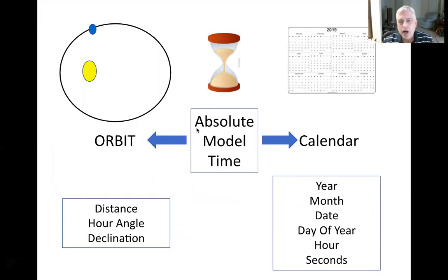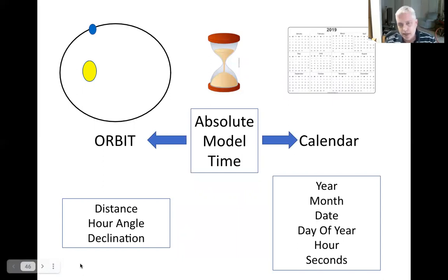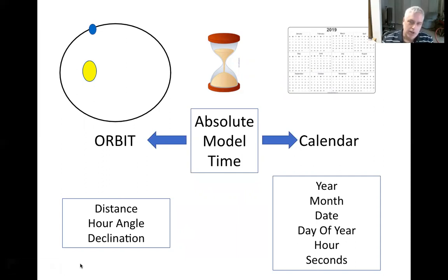The basic concept behind the time management system within GISS is that there's some notion of an absolute model time, and that somehow relates to the orbit, which tells us things about relative angles — what part of the planet is being illuminated at any given time. We also translate that absolute time into something which looks like a calendar for diagnostics and human understanding. People don't normally think in terms of hour angles or declination angles — we want years, months, dates, day of year, hours, seconds. That's what we consider to be the calendar, sometimes called a clock.